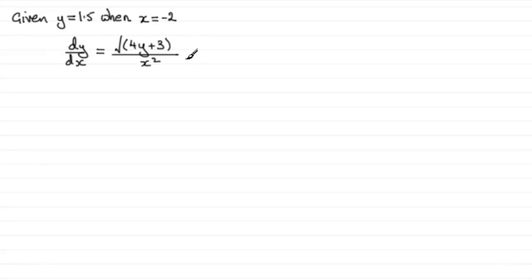Well we separate the variables, and that means we try and put all the x's on one side and all the y's on the other. So if I divide both sides by the root of 4y plus 3, I would get 1 over the root of 4y plus 3 multiplied by dy/dx would equal 1 over x squared.